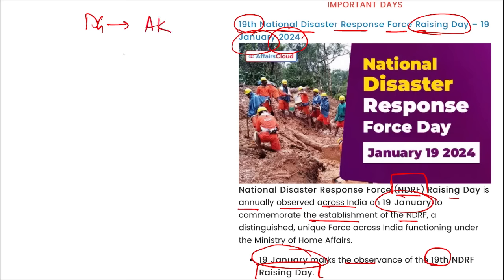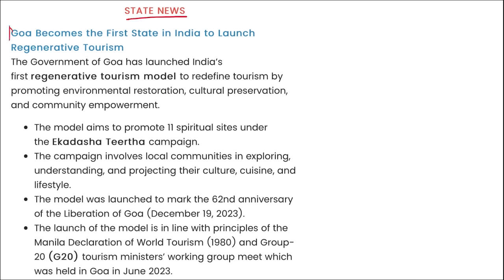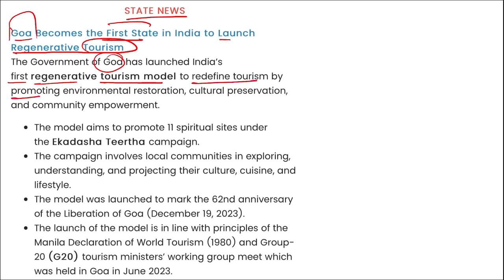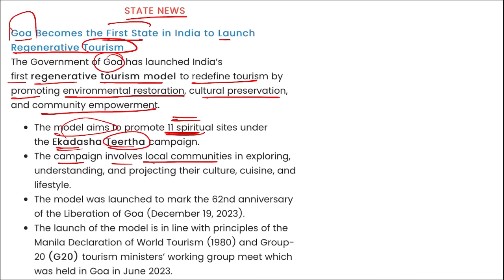In state news: Goa became the first state in India to launch a regenerative tourism model. Goa launched India's first regenerative tourism model to redefine tourism by promoting environmental restoration, cultural preservation, and community empowerment. This model aims to promote 11 spiritual sites under the Ek Dasha Tirtha campaign, involving local communities in exploring their culture, cuisine, and lifestyle. The model was launched to mark the 62nd anniversary of the liberation of Goa on 19th November.